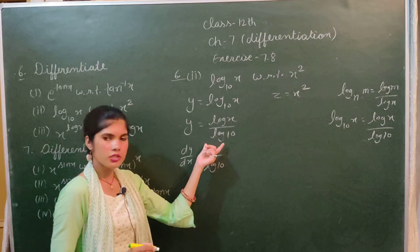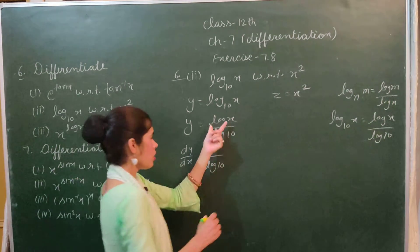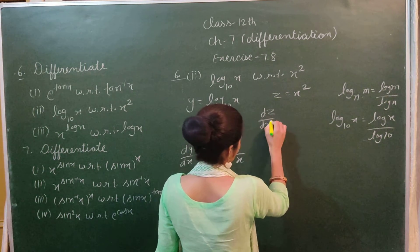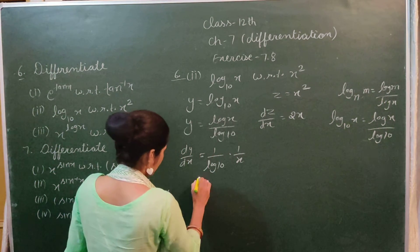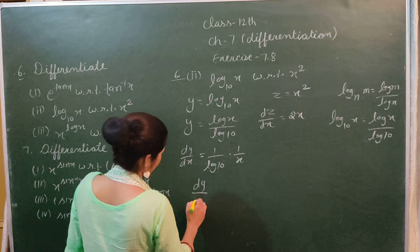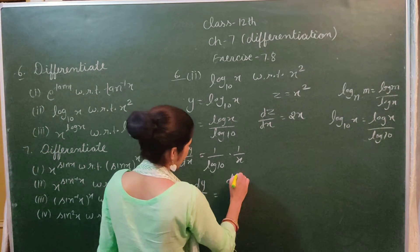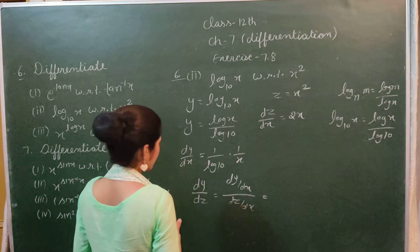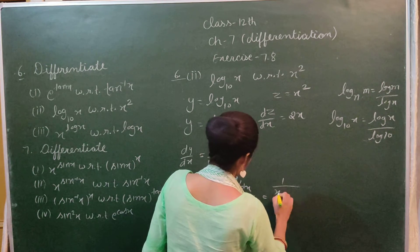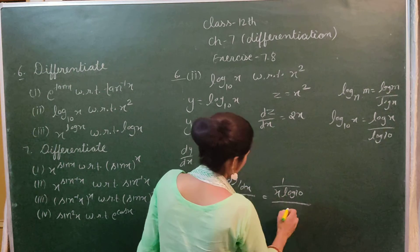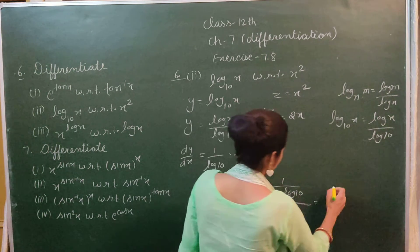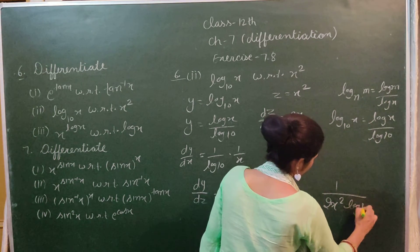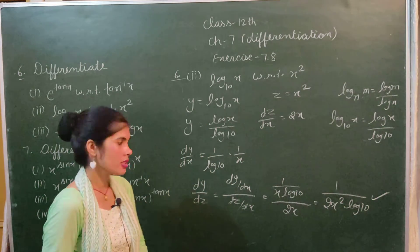Since log 10 is a constant, we take it out. Differentiating y with respect to x gives (1/log 10) times (1/x). Differentiating z = x² with respect to x gives 2x. Therefore dy/dz = dy/dx divided by dz/dx = (1/(x log 10)) divided by 2x.